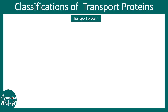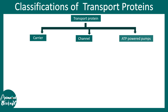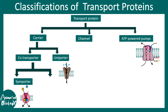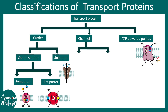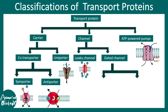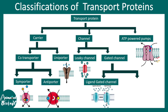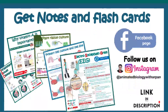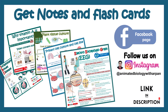This kind of pump can be found in the plasma membrane of neurons, where it maintains the resting membrane potential, as well as in cardiac membranes. Overall in this video, we looked at transport proteins and three categories: carriers, channels, and ATP-powered pumps. We examined how ATP-powered pumps work, how co-transporters and uniporters differ, and delved into the details of simport and antiport. Among channels, we looked at leaky channels, ligand-gated channels, and voltage-gated channels and their operation.